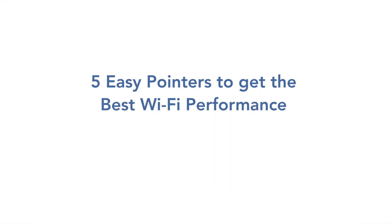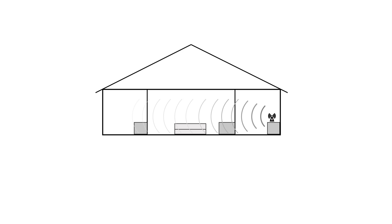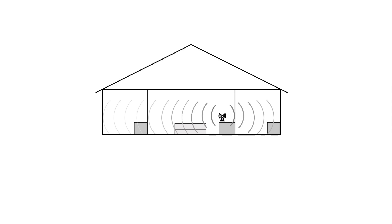So what can we do? Here are five easy pointers to help get the best Wi-Fi performance. First, locate the router as centrally as possible. It may not always be easy, but by locating the router in a central position we can minimise the distance signals need to travel.